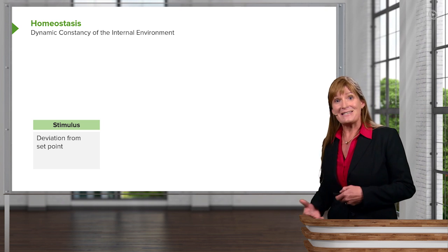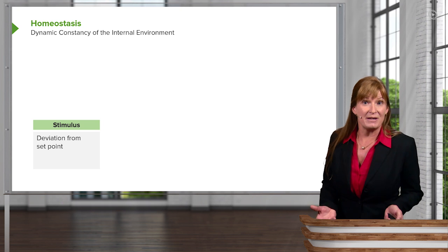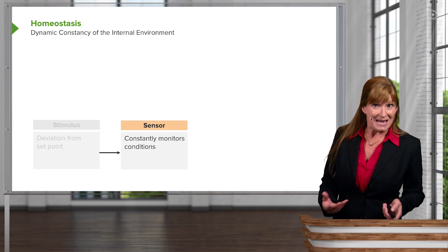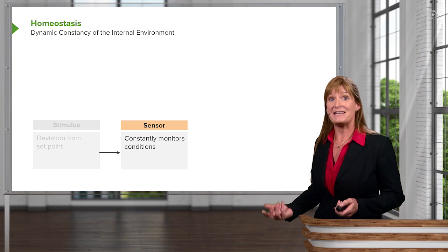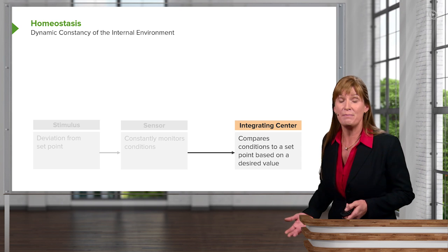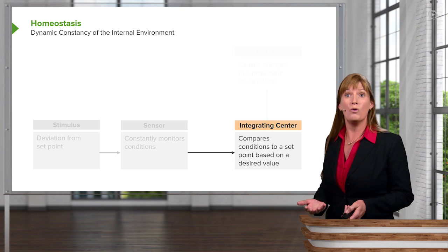In homeostasis, let's take the example of a house and your room temperature. There's a stimulus. That stimulus would be heat. The heat is detected by the thermostat or the sensor in your home, and that sensor will integrate that with what the set point should be for your house temperature. And once the house temperature has been compared, if it's too cool or too warm, we're going to have an effect.